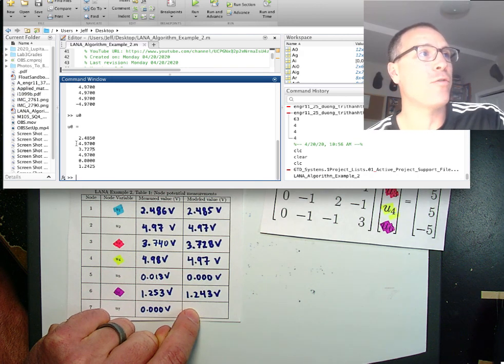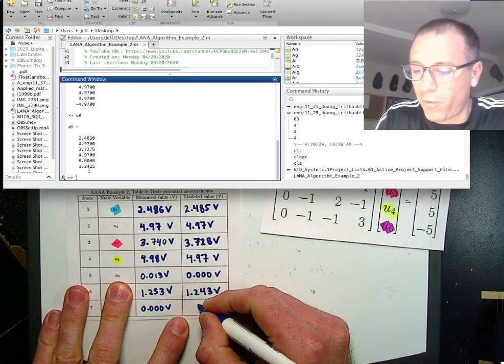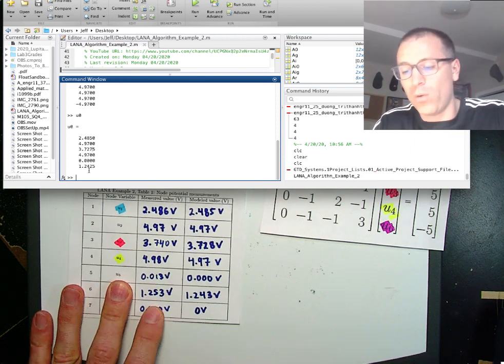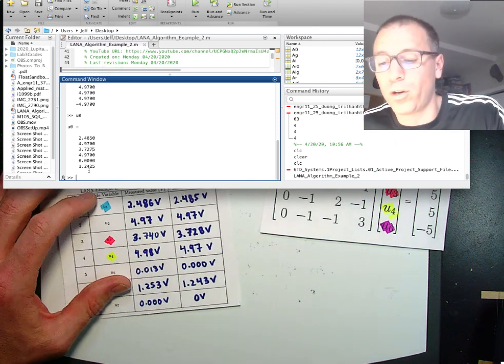We don't get a value for U7. And that is because U7 is defined to be the ground node. So in our model, we actually just ground that out. We'll get in a lot more of that as we work through this.